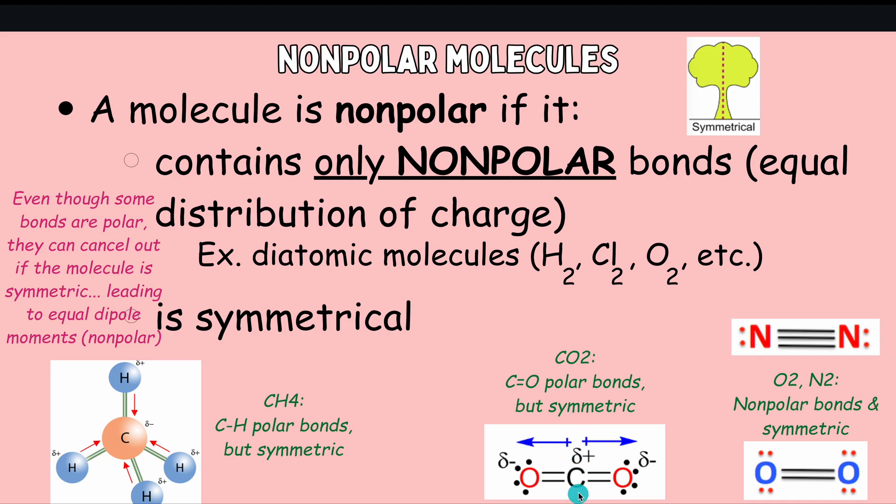If we were to cut this molecule in half, if we were to place like a mirror in the middle of it, slice right through it, it would be the same on both sides. So it would be symmetric. Therefore, CO2 is a perfect example of how a nonpolar molecule, because it is symmetric, can have polar bonds.